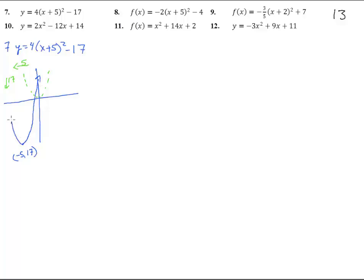I don't know what the y-intercept will be yet — I may have to adjust that later, but let's look. The y-intercept happens when x is 0, so we get 4 times 5 squared. 5 squared is 25, times 4 is 100, minus 17 is 83. That's going to be up there quite a ways.